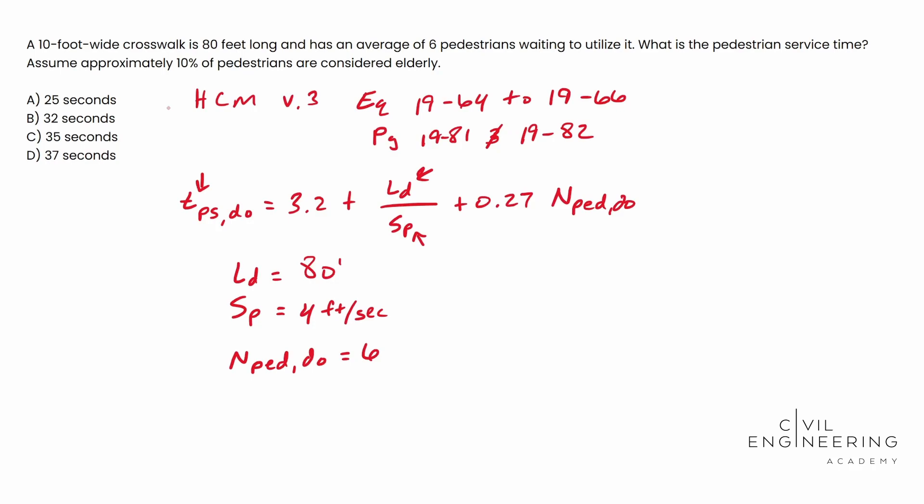Now why in the world did I use this formula in contrast to another one? Well, take careful notice to the wording at equation 19-64 and 19-65. The difference between the two is whether or not your crosswalk width is greater than 10 feet.